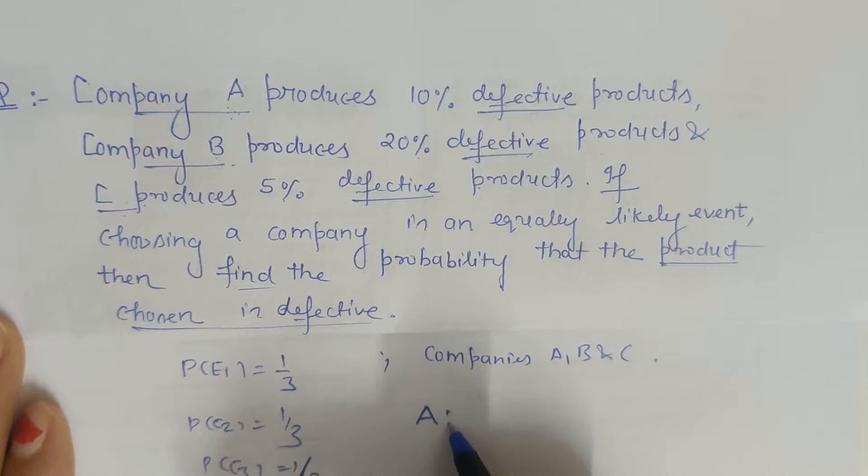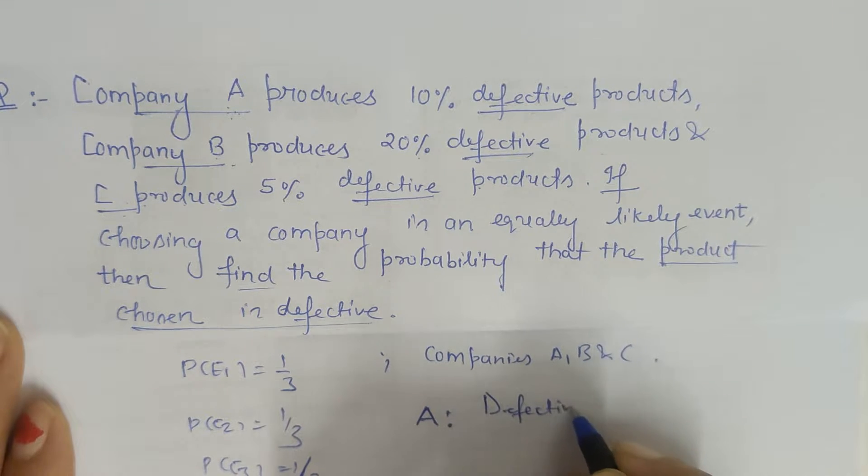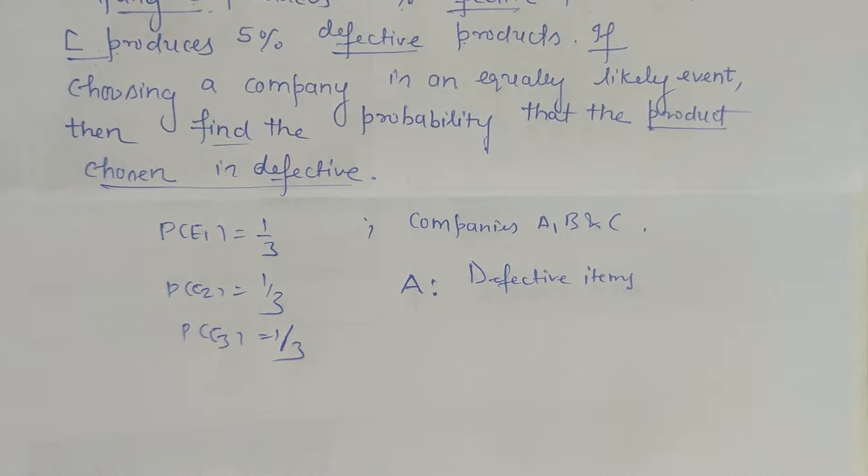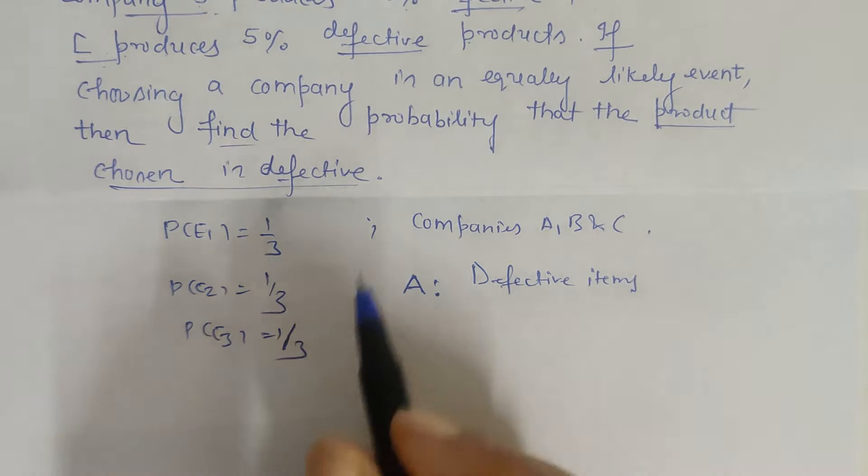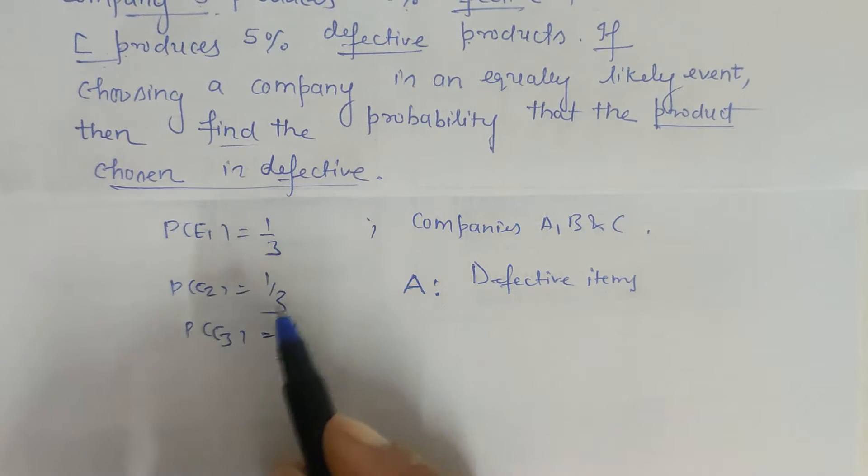And what is the common associated event with all three companies? Producing defective items. This is the common associated event with respect to the three companies. Now, we have to find the probability that the product chosen is defective.